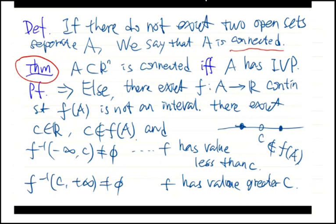We have proved the only-if part of this theorem, and we will prove the if part next. That is, we assume that A has the intermediate value property and prove that A is connected. We will prove this direction.